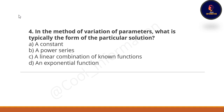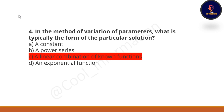Fourth question: in the method of variation of parameters, what is typically the form of the particular solution — a constant, a power series, a linear combination of known functions, or an exponential function? The correct option is a linear combination of known functions.